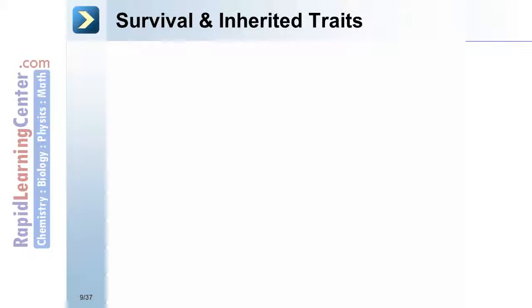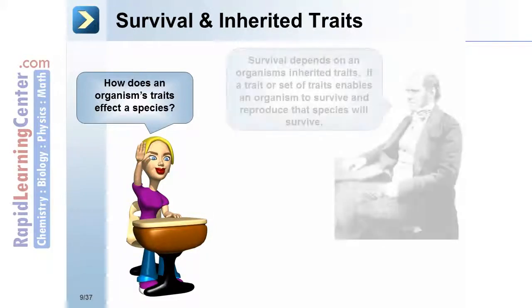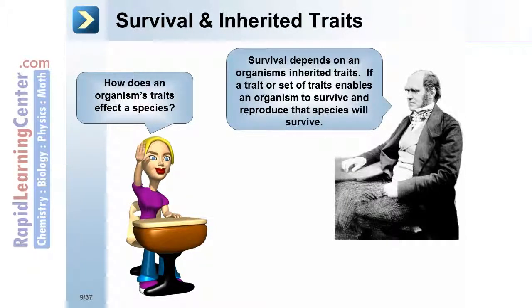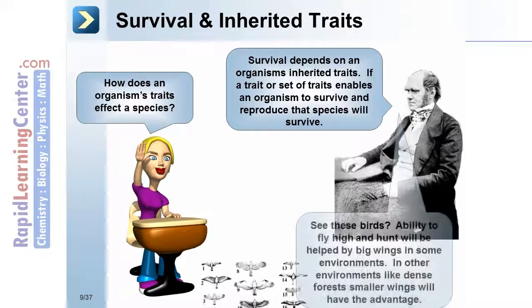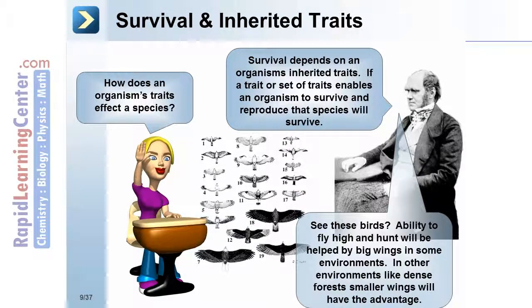Survival depends on an organism's inherited traits. If a trait or set of traits enables an organism to survive and reproduce, that species will survive. For example, the ability to fly high and hunt will be helped by big wings in some environments, while in others, like dense forests, small wings will have the advantage.